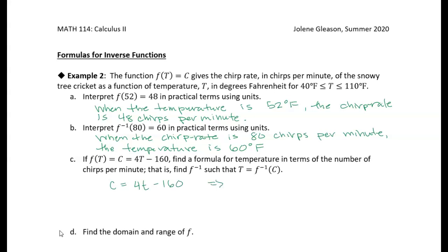I'm going to add 160 to both sides, so I get C plus 160 equals 4T. What I'm doing is rearranging this equation so I have a function for temperature in terms of chirp rate. So I have 4T equals C plus 160. Now if I divide both sides by 4, I get C plus 160 over 4 — so temperature equals C plus 160 over 4, or equivalently one-fourth C plus 40. That's our inverse function.